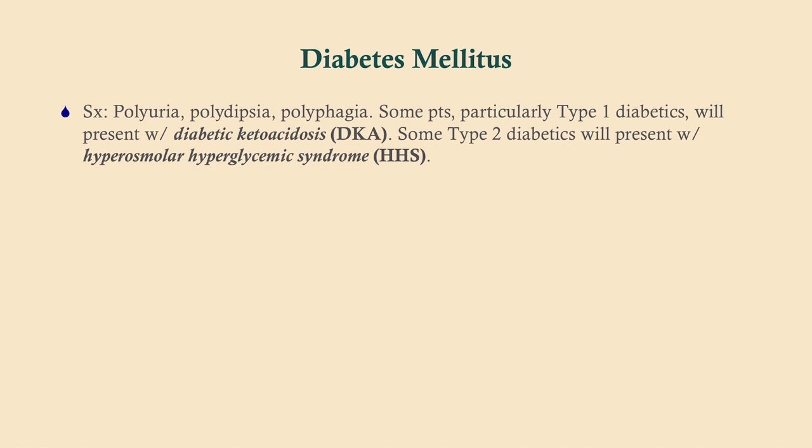This is how diabetes tends to present. Most of the time when we diagnose diabetes, it's on screening — a patient who's overweight and doesn't take care of themselves eventually develops type two. The classic symptoms are polyuria, because glucose spills into the urine and pulls water with it, causing higher urine volume; polydipsia, because they're dehydrated from peeing a lot; and polyphagia, because their cells aren't getting glucose and think they're hungry — though this is all for naught, especially with type one, since they won't get any of that sugar in.